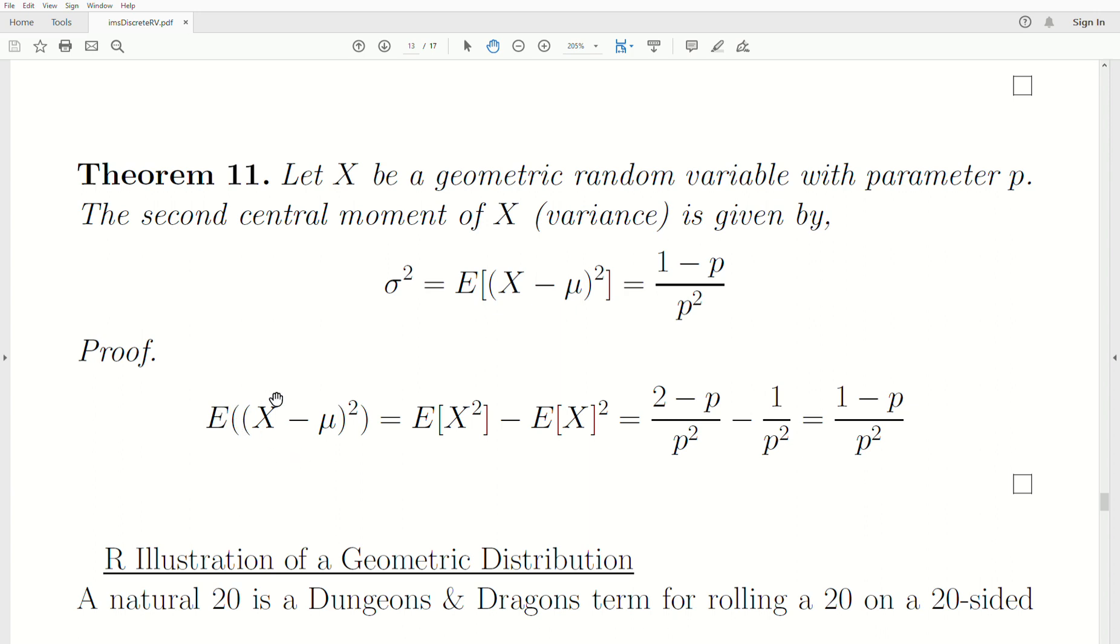And the proof is this. In an earlier video, this expected value, the second central moment is equal to the expected value of X squared minus the mean quantity squared. So we plug in the values that we achieved. Remember, expected value of X is one over P, but then squared, you get one over P squared. You combine those and you get one minus P over P squared, which is what it should be.